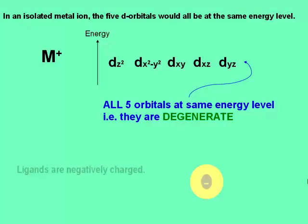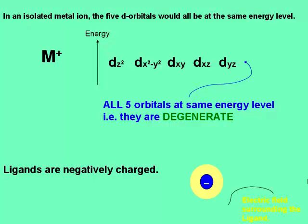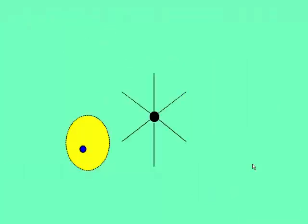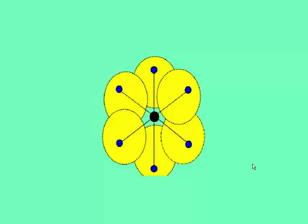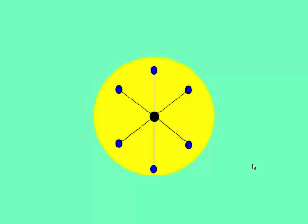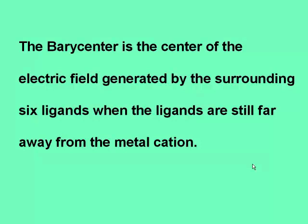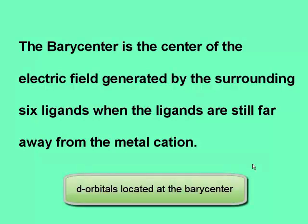We said that the ligands are negatively charged. Each of the six ligands would have an electric field surrounding them. But when they all come together around the metal cation, they effectively form a spherical field around the metal. For our purposes, we will define the barycenter as the center of this spherical field, so the d orbitals of the metal would be located at the barycenter.